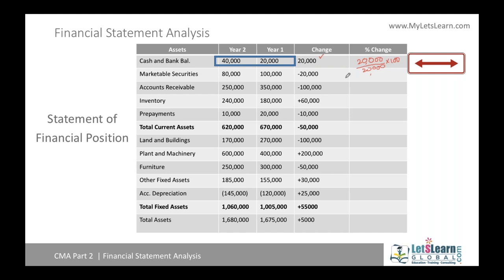For marketable securities, last year was 100,000 and this year it is 80,000, a decrease of 20,000. So the change is minus 20,000, divided by the base year amount of 100,000, times 100. In this comparative analysis, we compare assets and liabilities of the current year with the last year to find the dollar change.